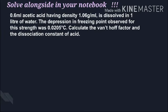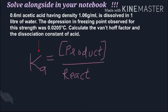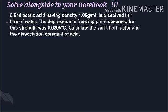Next: 0.6 ml of acetic acid having density 1.06 grams per ml is dissolved in 1 liter of water. The depression in freezing point observed for this strength was 0.0205 degrees Celsius. Calculate the Van't Hoff factor and the dissociation constant of acid. We need to find i and the dissociation constant.